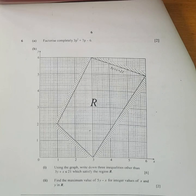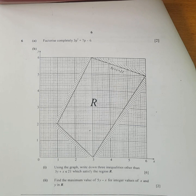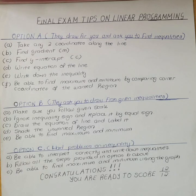We are going to start with number 6, which was in mids paper 2 in November 2009. The question on linear programming was on number 6B. We're supposed to use the graph to write down three inequalities other than 3Y plus X is less than or equal to 21, which satisfy the region R. So these are the short notes that you should follow when they have drawn the graph for you.